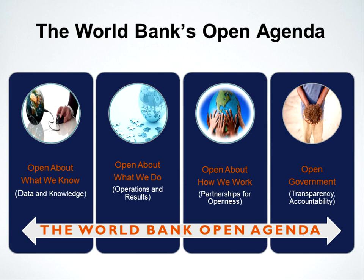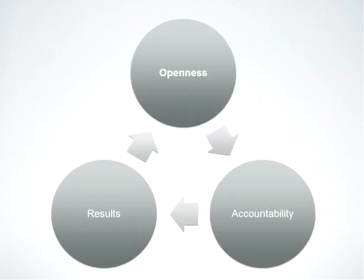The World Bank's open agenda is about being open about what we know by making our data and knowledge open. It's about being open about what we do through transparency with respect to our operations and results. It's about being open regarding how we work by working in partnerships and advocating for open access. And it's about promoting open government by ensuring that the countries we work with see us set the example on transparency and accountability. The reason this is important is that the more open you are, the more accountable you are, and the more accountable you are, the more likely you are to achieve the results you're after.